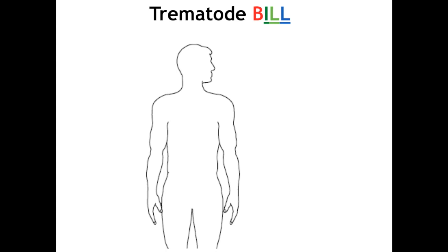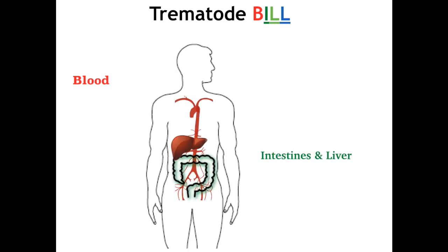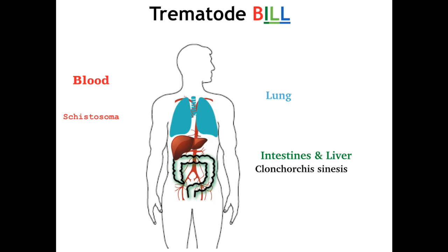This is 'Treatment Sode Bill,' who will demonstrate each fluke's life cycle in humans. Bill stands for Blood, Intestine, Liver, and Lung — the flukes are named for the location they ultimately colonize. The schistosomes are the blood flukes; Clonorchis sinensis and the Fasciola species infect the gut and liver, specifically the biliary system; and Paragonimus westermani is the lung fluke.